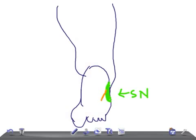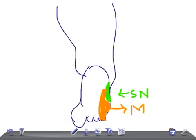The toe lateral to the small toe and this area — that's nothing but the tibial nerve, but remember this part is the medial plantar nerve — medial plantar nerve.